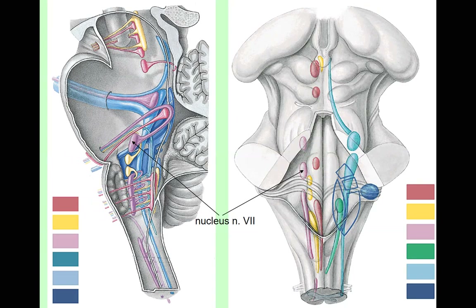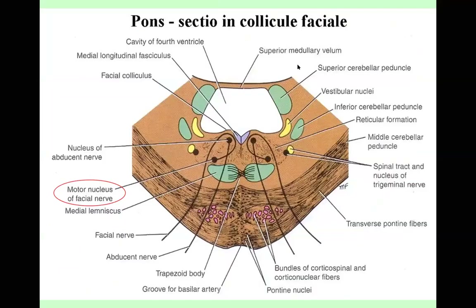This is sometimes called the internal knee or genu. On a section, we can see the nucleus of the abducent nerve with the facial nerve going around it, forming the facial colliculus. The fourth ventricle is nearby, with the cerebellum as the roof and the pons below. This structure is also the pyramidal tract — the major motor tract.